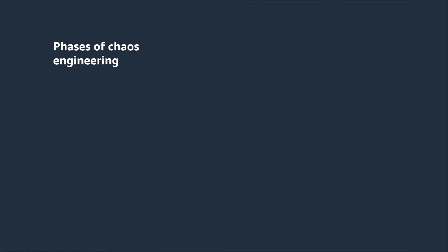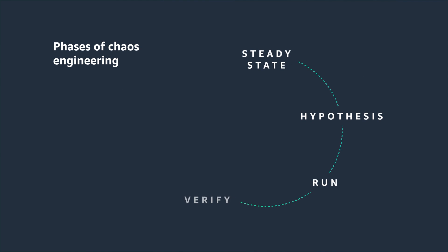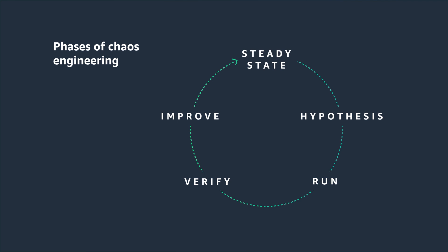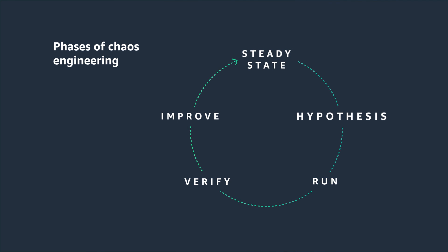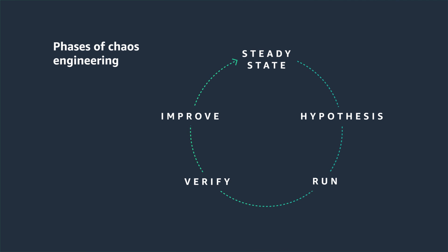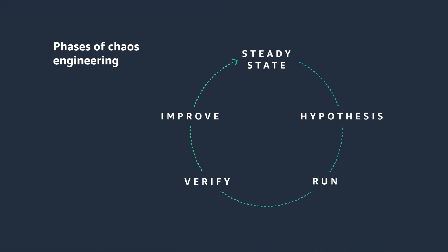To do that, you have to follow a well-defined scientific method that will take you from understanding the steady state of the system you are dealing with, to articulating a hypothesis, running an experiment — often using fault injection — verifying the results, and finally learning from your experiments in order to improve the system.